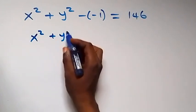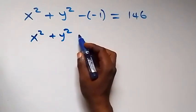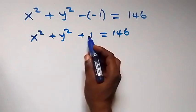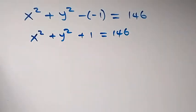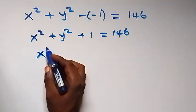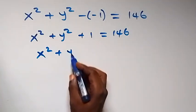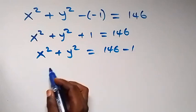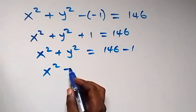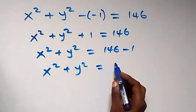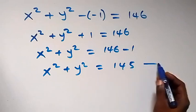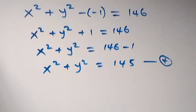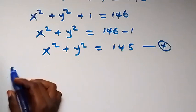This becomes x squared plus y squared plus one equals 146. Taking one to the other side, we have x squared plus y squared equals 145. Label this as equation four.